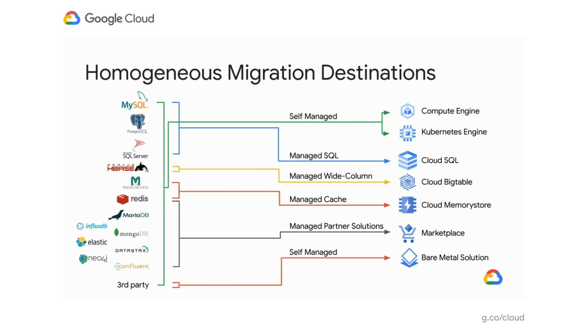For MySQL, PostgreSQL, and SQL Server, you can use our managed solution Cloud SQL. For HBase workloads, Cloud Bigtable has an HBase API, so you can move HBase workloads directly into Cloud Bigtable. For cache solutions, you can use Cloud Memorystore, or for Redis we also have managed partner solutions integrated with billing, monitoring, and accessible through the marketplace. We also have Bare Metal Solution, which brings third-party database workloads closer to our data centers.